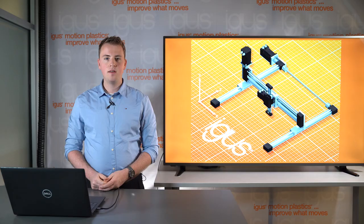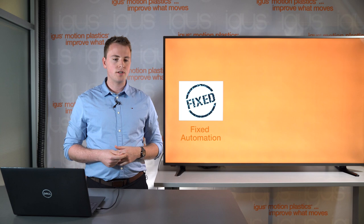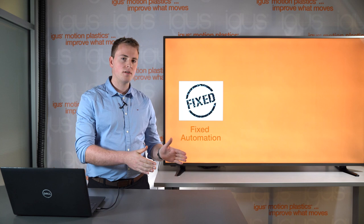In general, there are three types of industrial automation. The first is fixed automation, which is the use of optimized automation equipment that can perform one specific task.